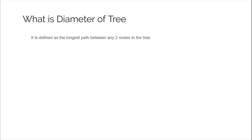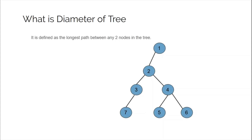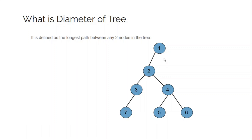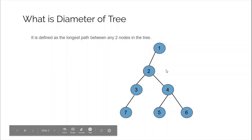So what is the diameter of a tree? The diameter of a tree is defined as the longest path between any two nodes in the tree. Suppose this is the given tree — the longest path starting from node 1 to any other node is only of length 3: 1 to 7, 1 to 5, or 1 to 6, all are of length 3. The distance is measured in terms of edges, so to go from node 1 to node 7 you need to traverse 3 edges. But the diameter of the tree is of length 4, that is from node 7 to node 5 or node 7 to node 6.